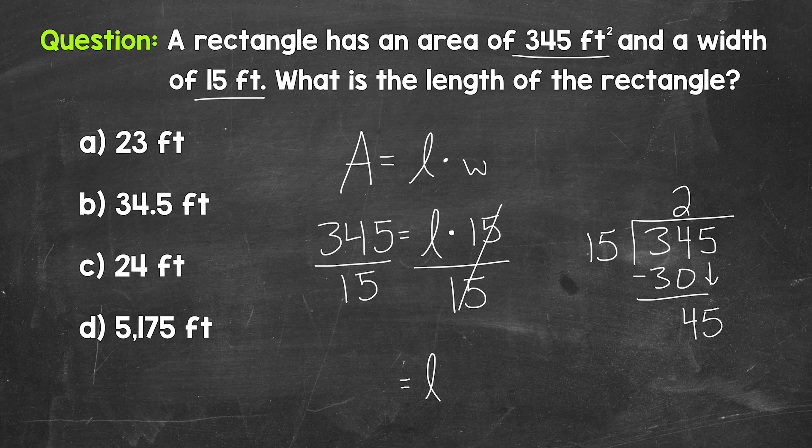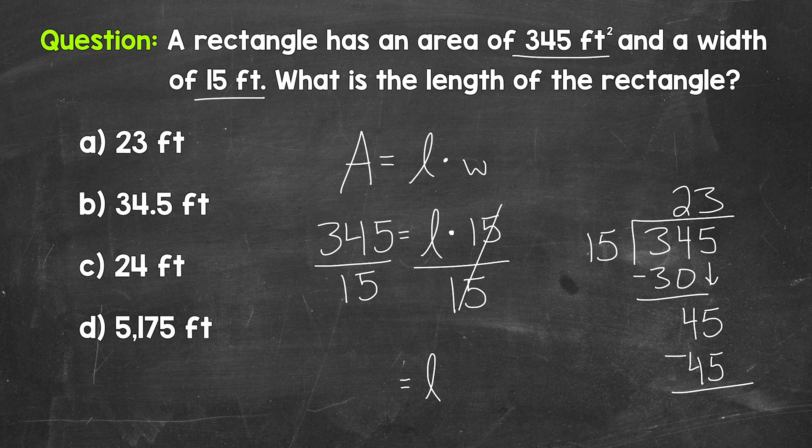Bring down the 5. And now we have 45 divided by 15. That's 3. We hit 45 exactly here. 3 times 15 is 45. Subtract. 45 minus 45 gives us 0. So we end up with 23.